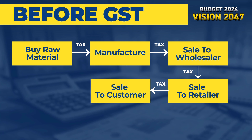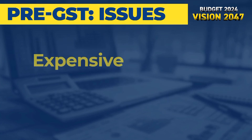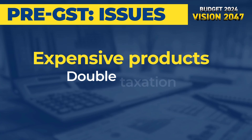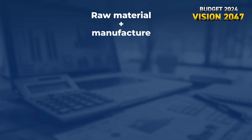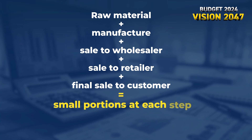This led to confusion and often big hikes in prices of products. Many of us ended up paying tax on tax, also known as double taxation. With GST, a person has to pay tax only on the monetary value that is added to the product.